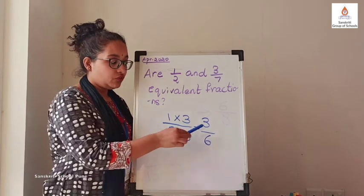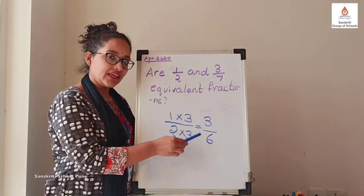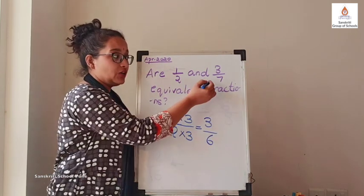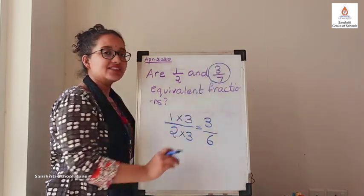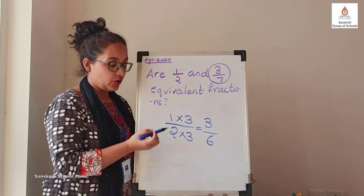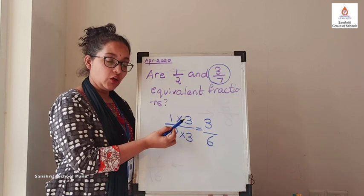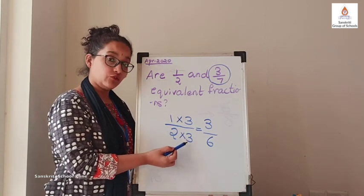That means 3 upon 6 is equivalent fraction for 1 upon 2, but not 3 upon 7. Because when you are multiplying numerator by 3, you should also multiply denominator by 3.